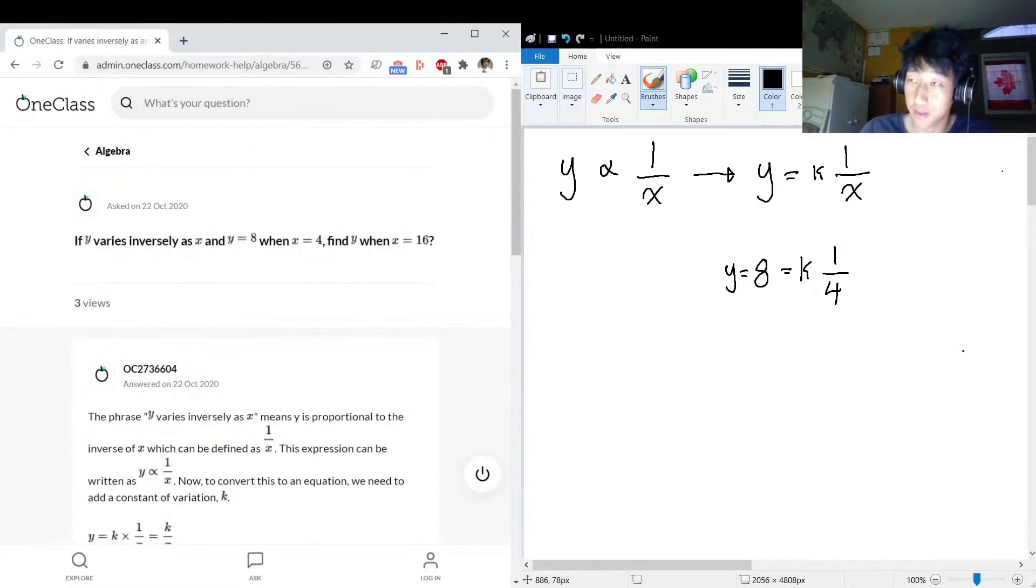We can actually solve for that if we multiply both sides by 4, so that'll be 4 times 8 equals k. What's 4 times 8? 32.